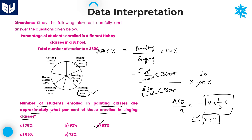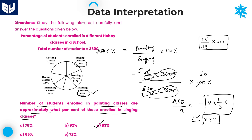Important exam tip: don't write out the full values like '3600 divided by 100' in both numerator and denominator since they are common to both. Directly write painting value 15 and singing value 18, then compute 15 by 18 into 100. This saves time in the examination.